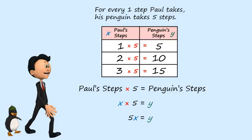Fun fact, this type of relationship is referred to as multiplicative. It's fun to say, too. If some of you were wondering if five x equals y could also be written as y equals five x, it can.